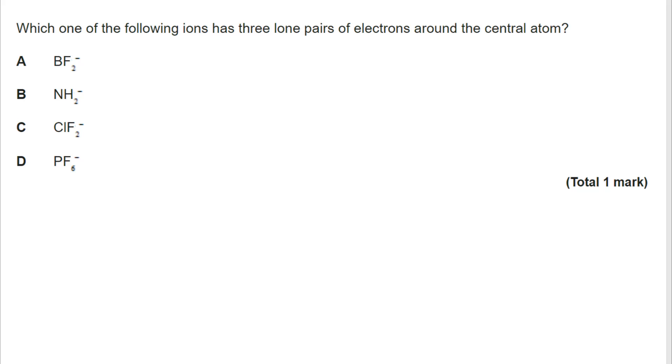Okay, so we want to know which of these has three lone pairs of electrons around the central atom. My advice is to draw them all out. It takes a little bit of time. You can sketch them. You're not going to be marked on the quality of what you draw, but you can get the idea much more visually and much more clearly. So if I take a look at A, BF2-, it looks like this. I have got one lone pair. That's not the answer.